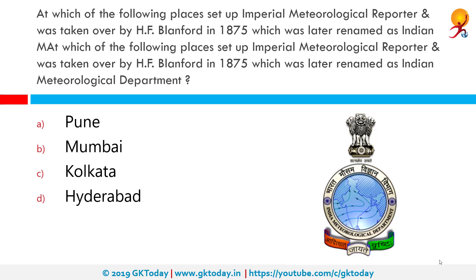At which of the following places was the Imperial Meteorological Reporter, taken over by H.F. Blandford in 1875 and later renamed the Indian Meteorological Department, situated? It was situated in Kolkata. The Indian Meteorological Department is an agency of the Ministry of Earth Sciences and is the principal agency responsible for meteorological observations, weather forecasting, and seismology.